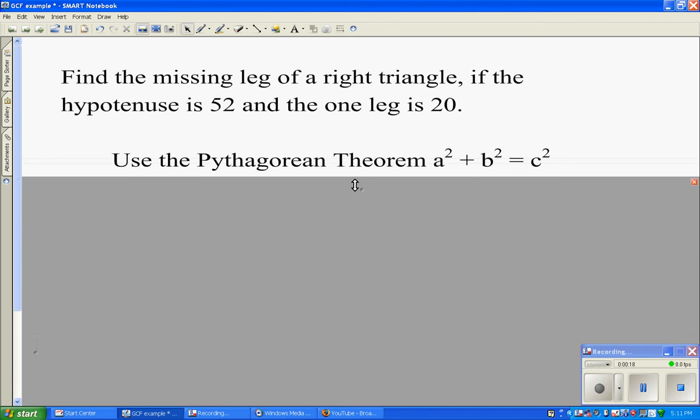Using the Pythagorean theorem, a squared plus b squared equals c squared, we plug in c squared is always the hypotenuse, which in this case is 52. A and B are the legs. It doesn't matter which one you substitute into.